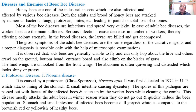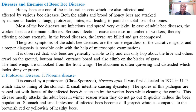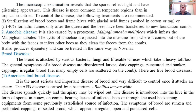The disease mostly attacks adult bees in the winter season, during which all colony members remain inside, reducing the bee population. Stomach and intestine of infected bees become dull grayish-white compared to the brownish-red or yellowish color of healthy bees. Microscopic examination reveals that the spores reflect light and have a distinct appearance. This disease is more common in temperate regions than in tropical countries.